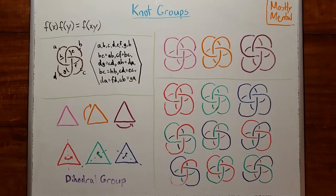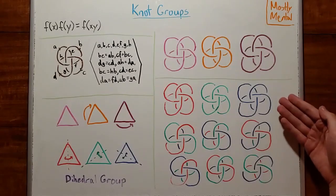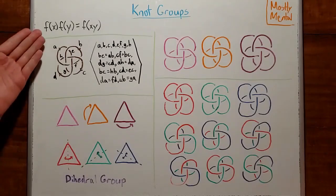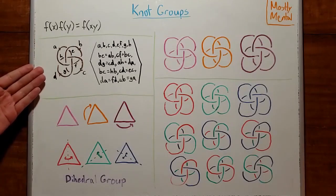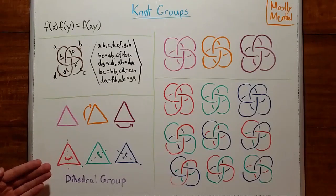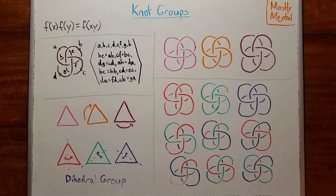If you watched the last video, these diagrams with reflections might look familiar. They're the three colorings of the knot. In fact, that will generally be true. The three colorings of a knot are the homomorphisms of the knot group onto the symmetries of a triangle, which includes some reflections. And similarly, the five colorings are the homomorphisms onto the symmetries of a pentagon, seven colorings for a heptagon, and so on.